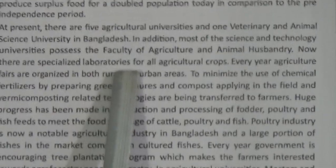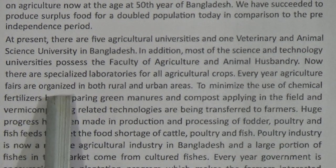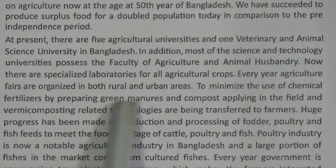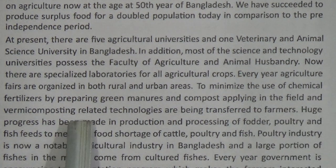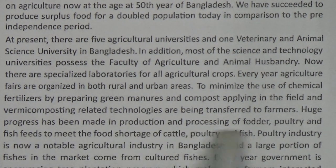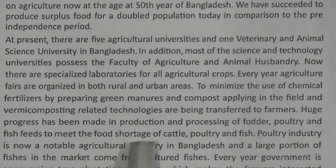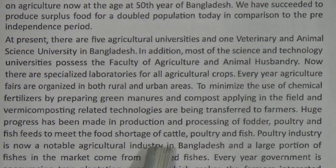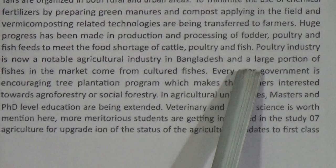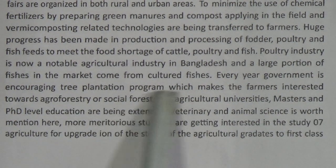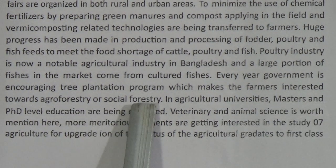Now there are specialized laboratories for all agricultural crops. Every year, agriculture fairs are organized in both rural and urban areas. To minimize chemical fertilizer use, grain management, compost, and vermicomposting technologies are being transferred to farmers. Huge progress has been made in production and processing of fodder, poultry, and fish. Poultry industry is now a notable agricultural industry in Bangladesh. Every year, the government encourages tree plantation programs, creating interest in agroforestry among farmers.